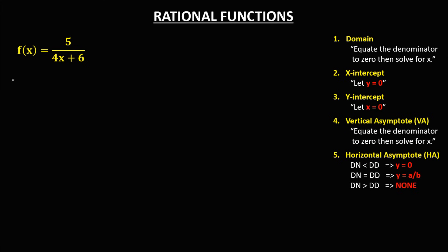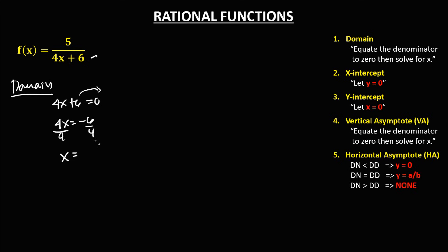For the third given, to find the domain, equate the denominator to 0. So 4x plus 6 equals 0. Transpose this positive 6, so that becomes negative 6, then divide both sides by 4. So x equals negative 6 over 4, which simplifies to negative 3 over 2. Therefore, the domain is x element of real numbers such that x not equal to negative 3 over 2.